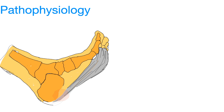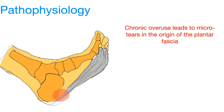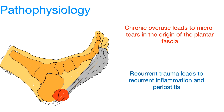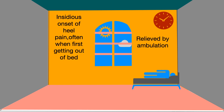The chronic overuse leads to a micro tear in the origin of plantar fascia, and the repetitive trauma leads to recurrent inflammation and periostitis. A classical finding in a patient with plantar fasciitis is insidious onset of heel pain, often when first getting out of bed, relieved by ambulation.